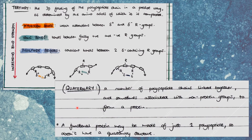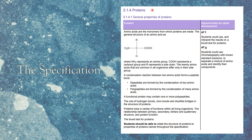Some proteins also have a quaternary structure, which is a number of polypeptide chains linked together and sometimes associated with non-protein groups to form a protein. Note that a fully functioning protein may be made of just one polypeptide, so it doesn't have to have a quaternary structure. We've now looked at the structure of amino acids, the formation of dipeptides and polypeptides, and the structure of proteins.